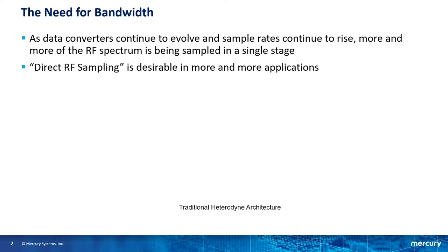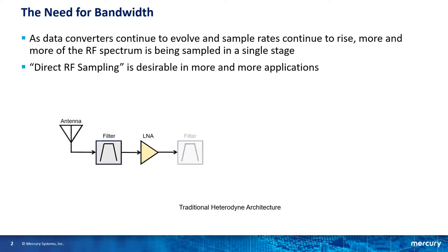In a traditional heterodyne architecture, or a superhet radio, a signal is received at the antenna and filtered through a bandpass filter. It then passes through a low noise amplifier, then filtered again through a tighter bandpass filter, and then it's sent to the mixer.